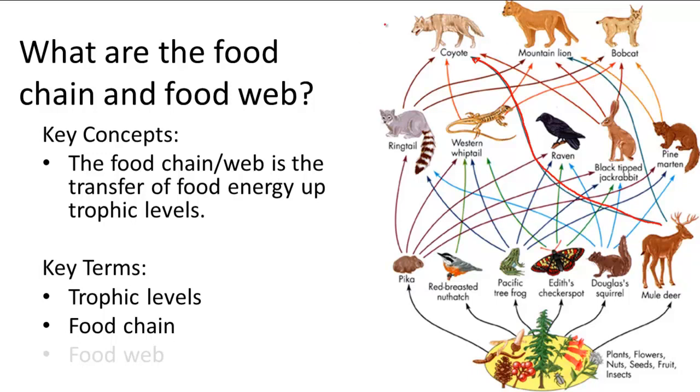So another thing that you should know about food webs is that there are things that are in a food web that aren't usually represented. And the first thing is the sun. And the sun is the ultimate source of all energy in this food web because the producers take the energy from the sun and then dissipate it into the food web.